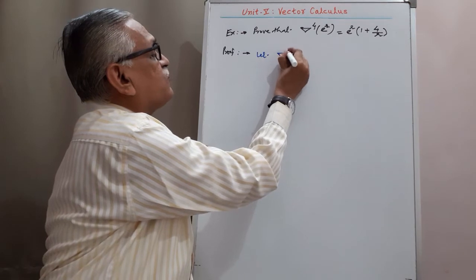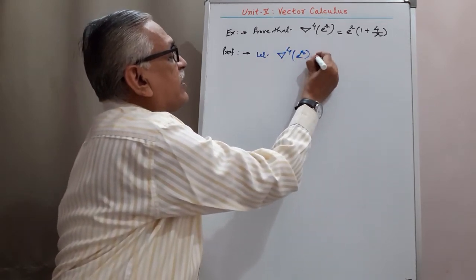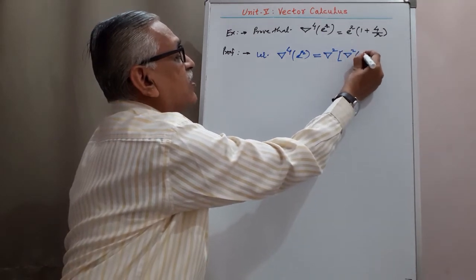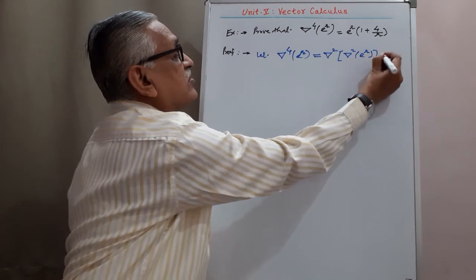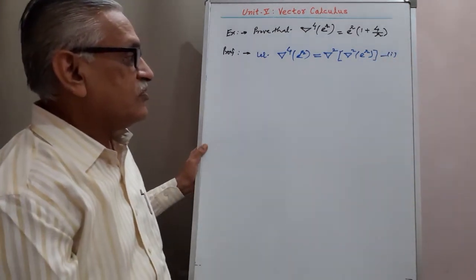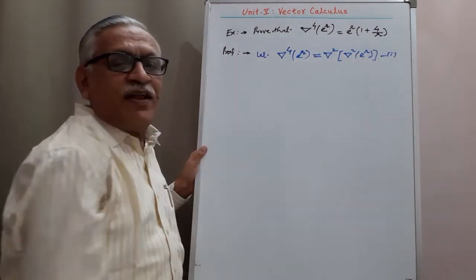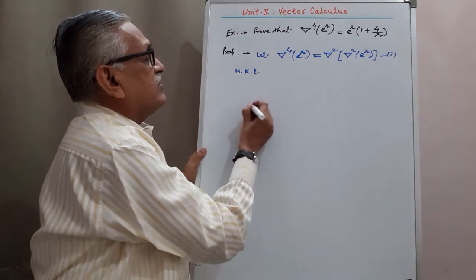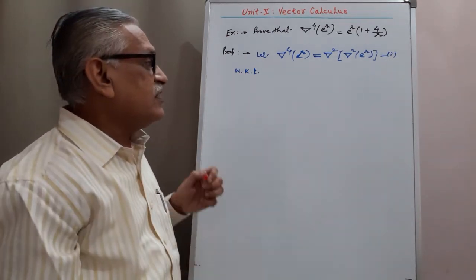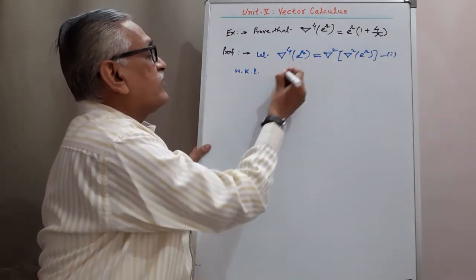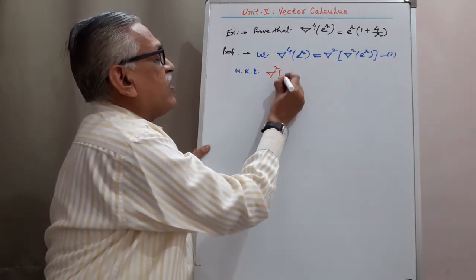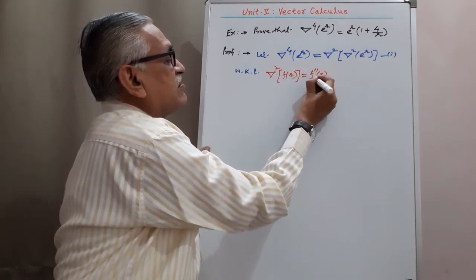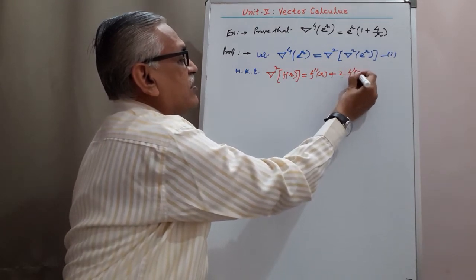del raised to 4 operated on e raised to r can be written as del square of del square of e raised to r. We call this equation 1. We know that del square of f of r equals f double dash of r plus 2 times f dash of r divided by r. I proved this in my previous video.